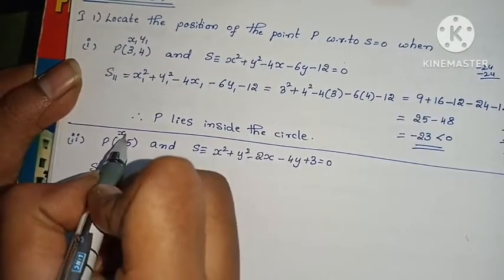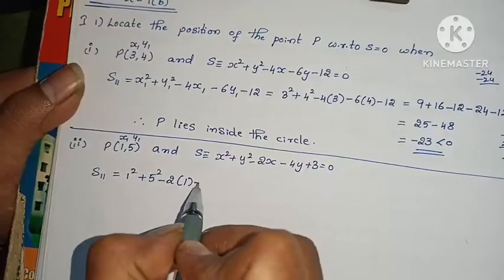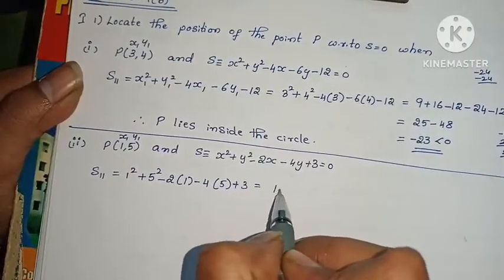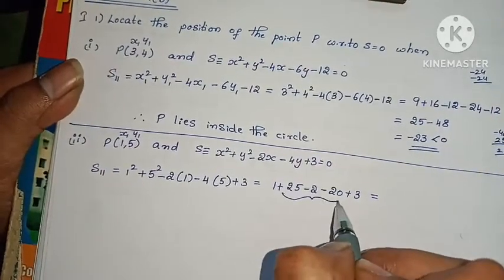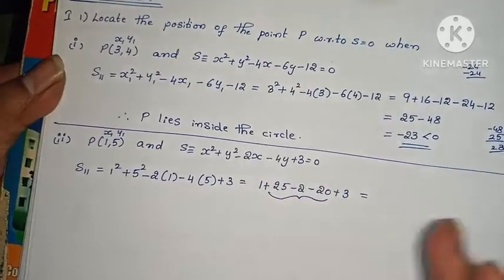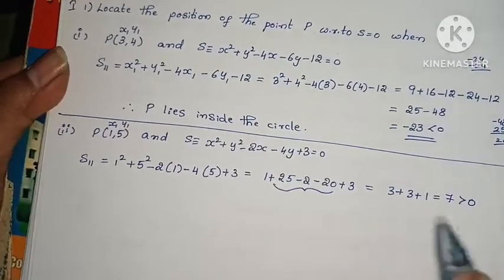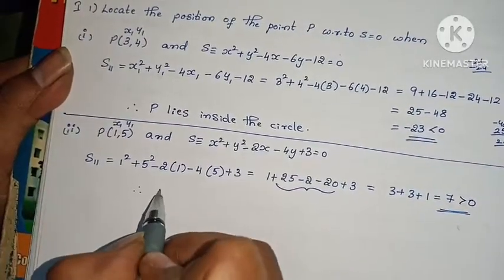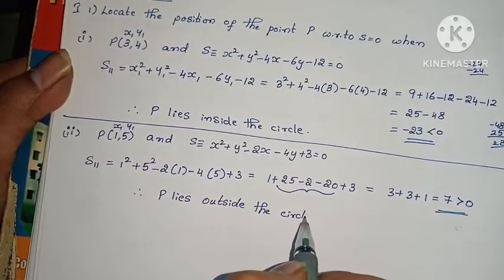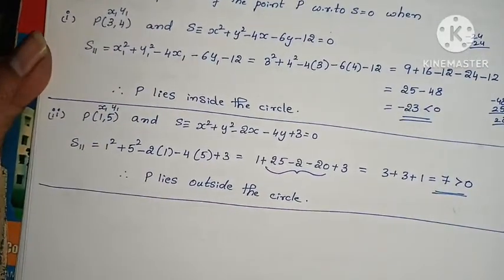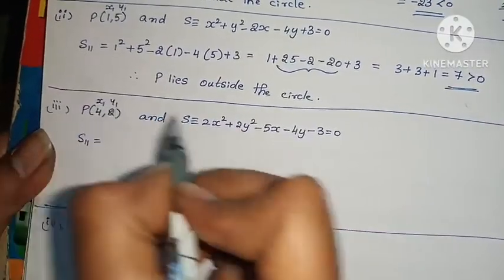For the next point, S11 = x1 squared plus y1 squared minus 2 into x1 minus 4 into y1 plus 3. Substituting x1=1, y1=5: 1 squared plus 5 squared minus 2 minus 20 plus 3 = 1 plus 25 minus 2 minus 20 plus 3.